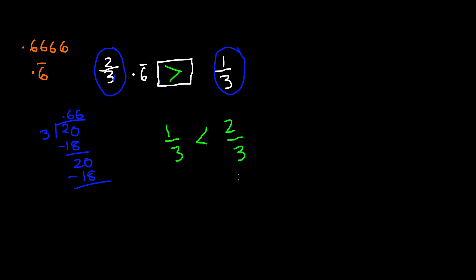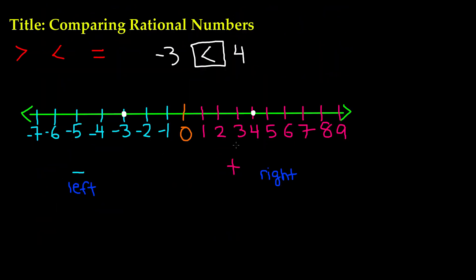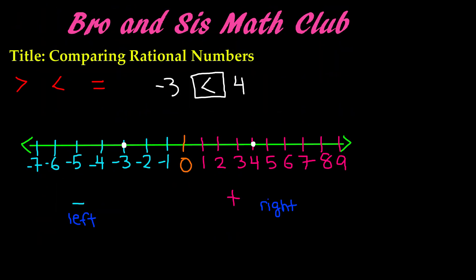This is how you compare rational numbers. Remember, if you have a decimal on one side and a fraction on the other, you can always change a decimal into a fraction, or you could also change the fraction into a decimal. But I think fractions are easier to compare, especially if they have the same denominator. Thanks for watching, and we'll see you guys next time. Bye.